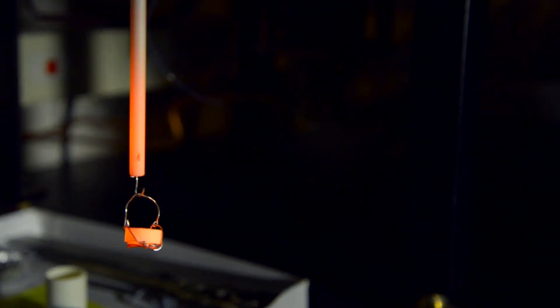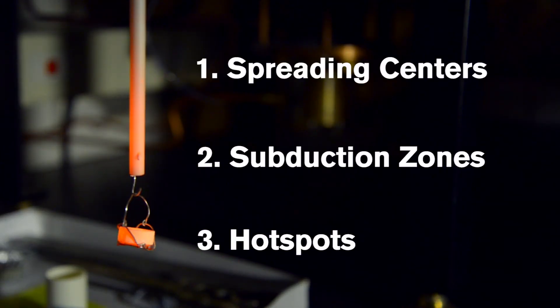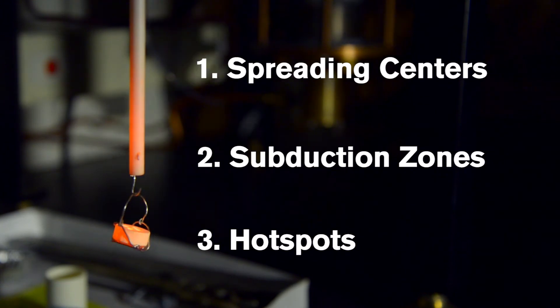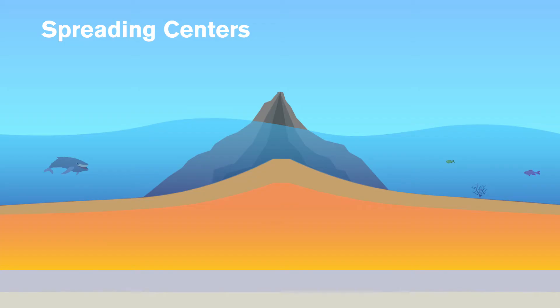So if the mantle is solid, you're probably wondering how do we form liquid magma? There are three main ways to melt the mantle and form magma: spreading centers, subduction zones, and hot spots. Spreading centers are where two tectonic plates are moving away from each other.